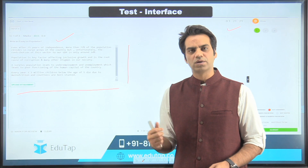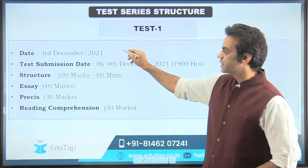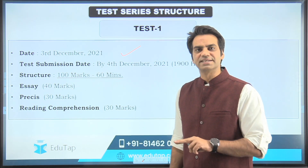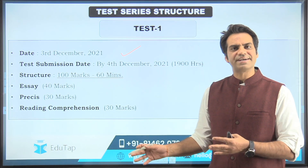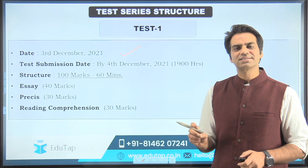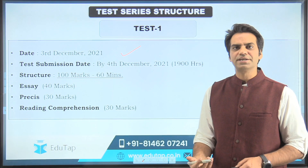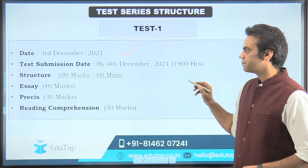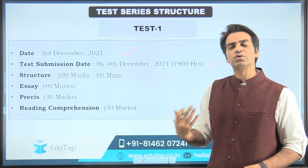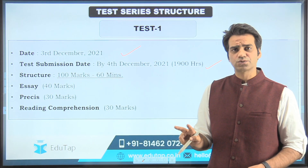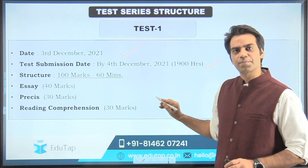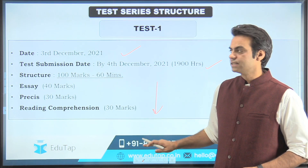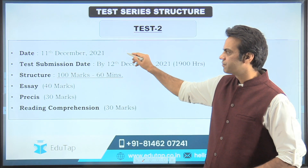Now let's look at the schedule. The first test will be conducted on 3rd December 2021, and you will have two days to write your answers. The dates are kept on weekends — Saturday and Sunday — so that working candidates don't face issues. You can take the exam on Saturday or Sunday and submit your copies by 4th December. The simulation is exactly like your paper: 100 marks, 60 minutes, and three questions — essay, precis, and reading comprehension.